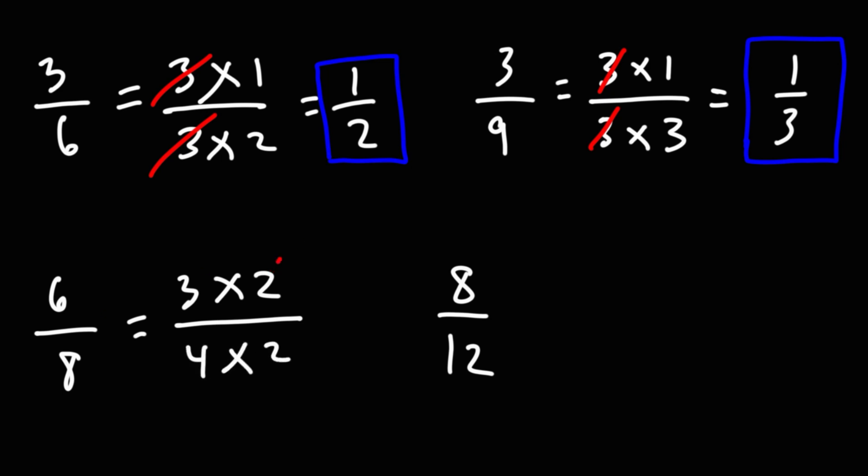Notice the common number here is 2. We can cancel that out, and what we have left over is 3 over 4.